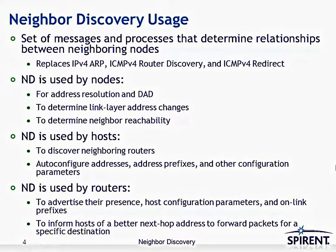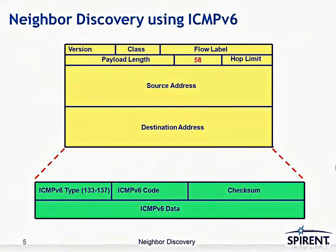Neighbor Discovery is used by routers specifically to advertise their presence, to announce host configuration parameters and on-link prefixes, and to inform hosts of a better next-hop address to forward packets for a specific destination. As mentioned, Neighbor Discovery uses the ICMPv6 control plane protocol to exchange its messages.